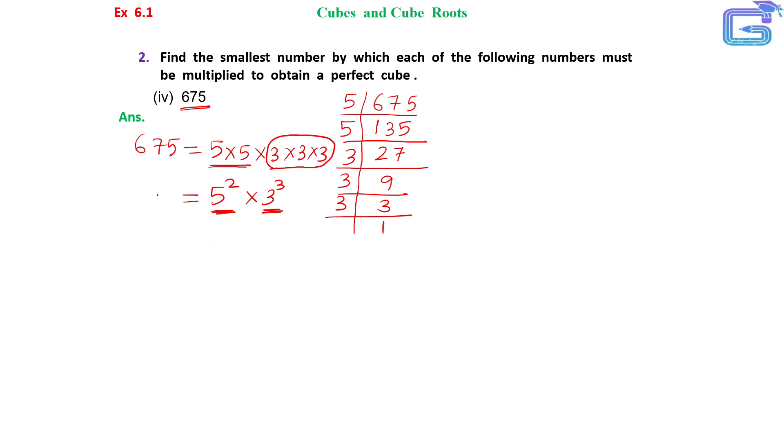So if we multiply this 675 by 5, one more 5 is there, then it will form a cube. That means 5 is the number. So we can write that 675 should be multiplied by 5 to obtain a perfect cube.